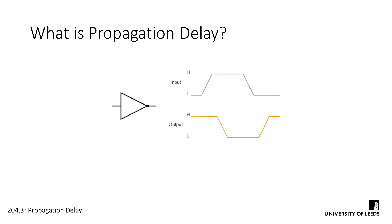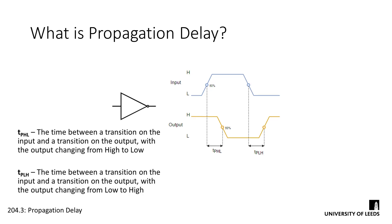Each individual component in a circuit has its own propagation delay and we measure this using two values. TPHL is the time between transition on the input and a transition on the output from high to low, and TPLH is the time between transitions from low to high. These measurements are taken according to a reference point on the transition, usually at 50% between the two voltage levels.